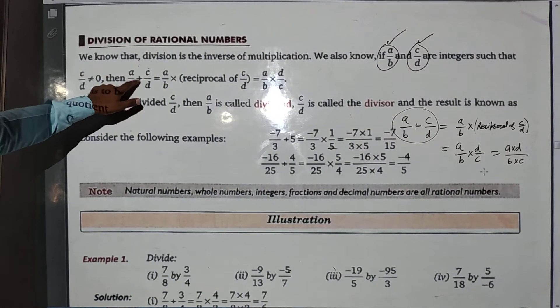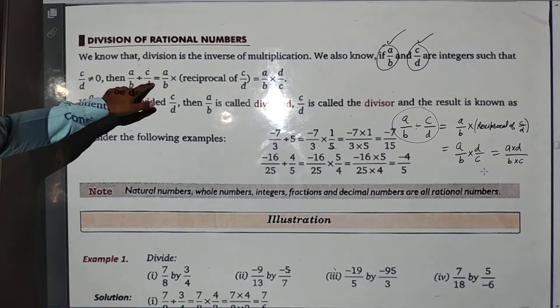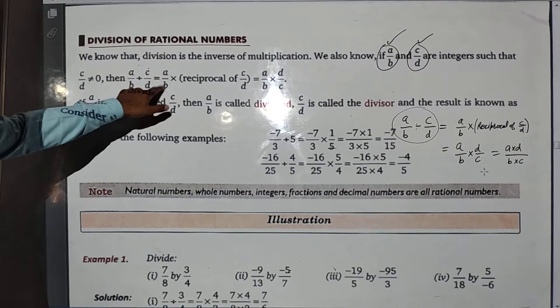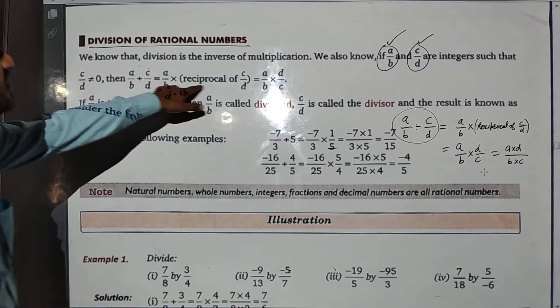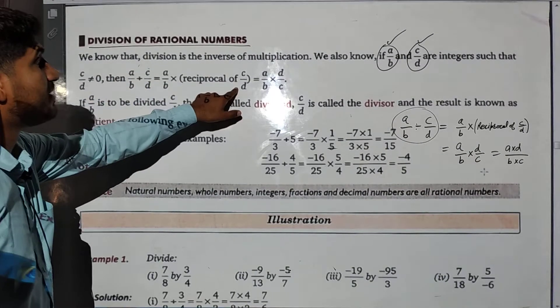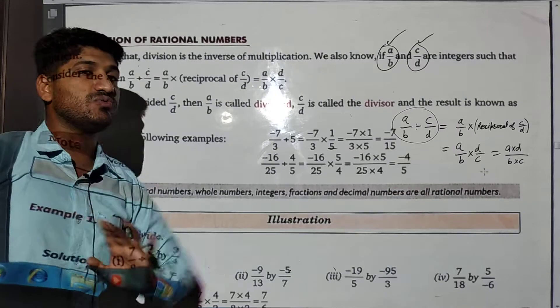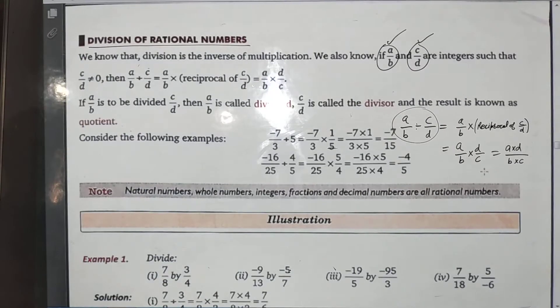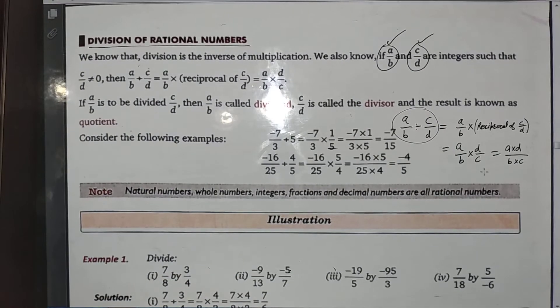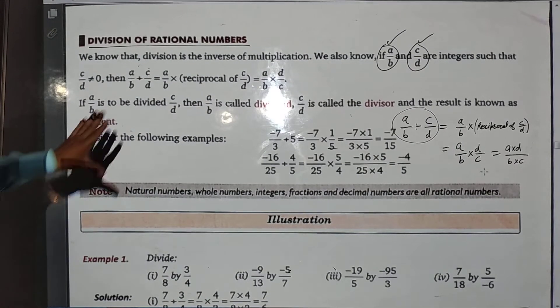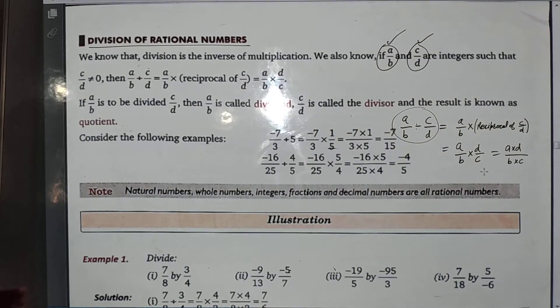So a/b divided by c/d equals a/b multiplied by the reciprocal of c/d, which equals a/b multiplied by d/c. In this way we divide rational numbers.